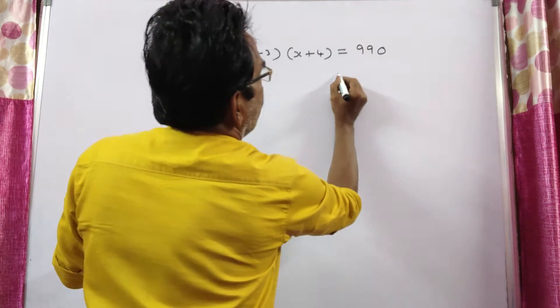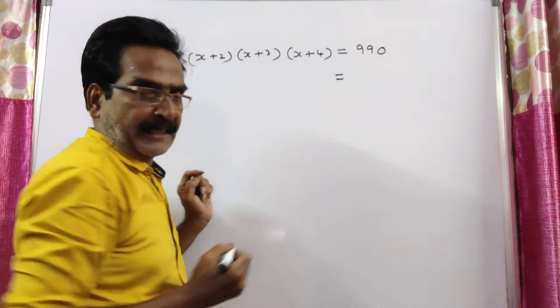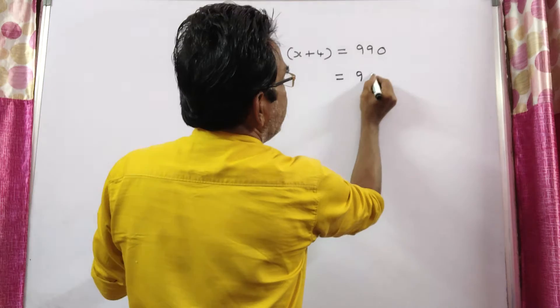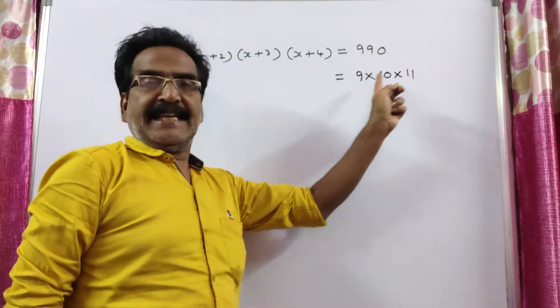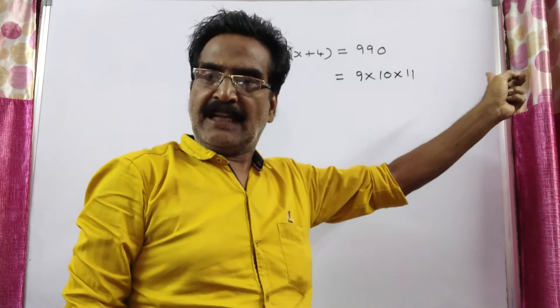So, 990 can be factorized into 9 into 10 into 11. 9 times 10 is 90, 90 into 11 is 990.